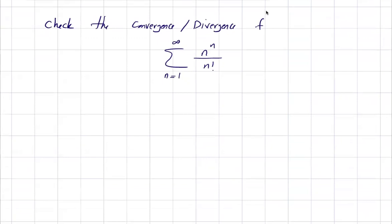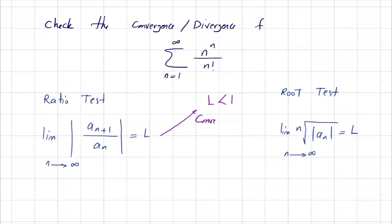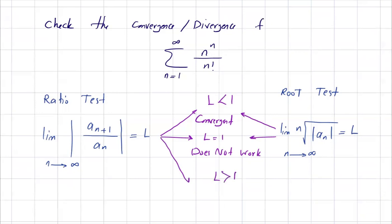Should we use the ratio test or the root test? The ratio test finds the limit of the absolute value of a_{n+1} divided by a_n as n goes to infinity. The root test finds the limit of the nth root of the absolute value of a_n as n goes to infinity, both equal to L. If L is less than 1, the series is convergent. If L equals 1, the test is inconclusive. If L is more than 1, the series is divergent.